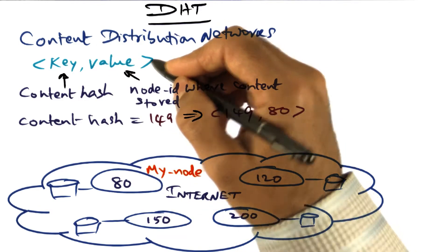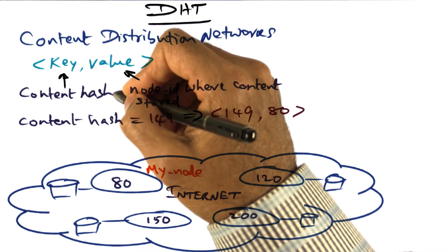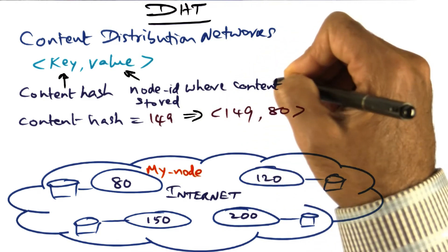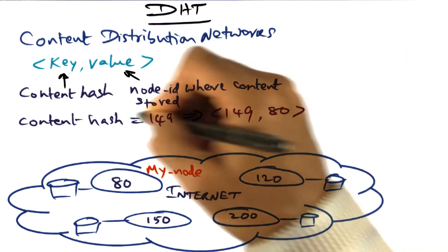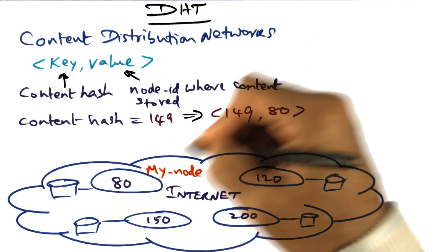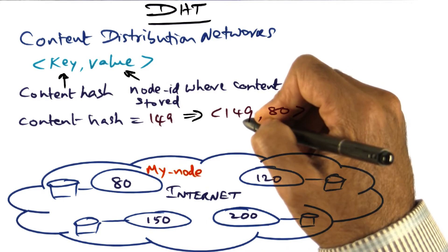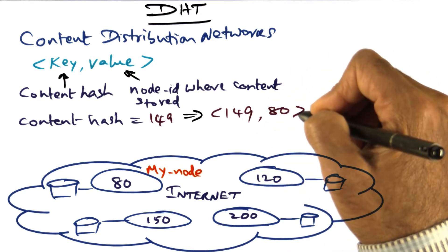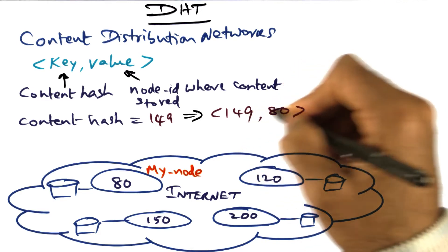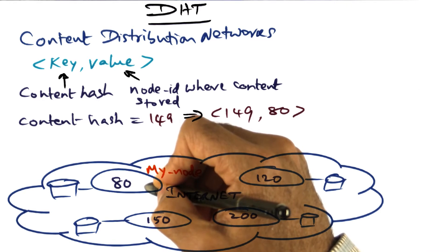Now I have a key value pair. The key is a bit string that is a hash of the content of what I want to store and make available to everybody, and the value is my node ID where the content is stored. Let's say that the content hash turned out to be 149 and my node ID is 80. So the key value pair that I've generated for my interesting video is 149 comma 80. 149 is the key and 80 is the value which is the node ID of my computer where I have the content.